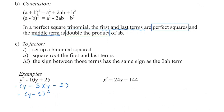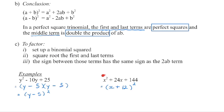The next one is also a perfect square trinomial. Square root the first term to get x, square root 144 to get 12. 1 times 12 is 12, doubled gives 24 — matching the middle term. So I can set it up as a binomial squared: square root of x squared is x, square root of 144 is 12, and the sign on the middle term is positive. Checking: square the first term for x squared, double the product gives 24x, and square the last term gives 144.